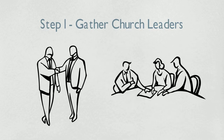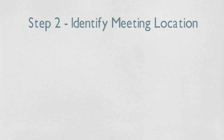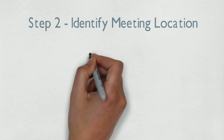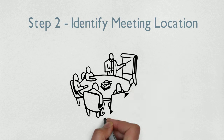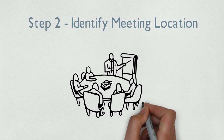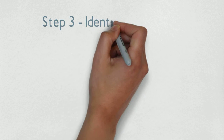Step number two: identify a suitable location to meet. The ideal location for this is a retreat-type setting — a private room in a restaurant, a hotel conference room, or someone's home. It simply needs to be a place without interruptions and distractions.